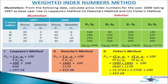In the third column we write P1Q1 — price of the current year multiplied by quantity of the current year (2008): 40×6=240, 60×5=300, 50×10=500, 40×20=800. Adding up, ΣP1Q1 = 1840. In the fourth column we write P0Q1 — price of the base year multiplied by quantity of the current year: 20×6=120, 50×5=250, 40×10=400, 20×20=400. Adding up, ΣP0Q1 = 1170.